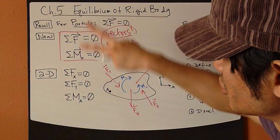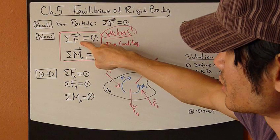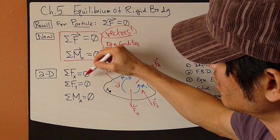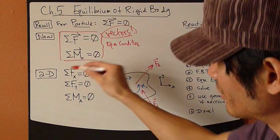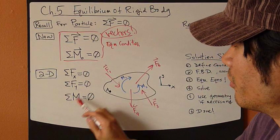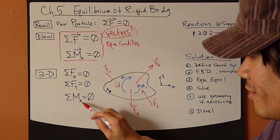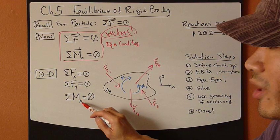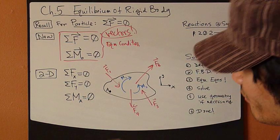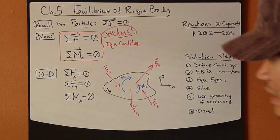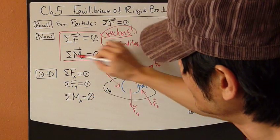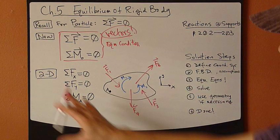The sum of forces equation will have X and Y components. Each equation is now a scalar equation, so you can plug in numbers. The sum of moment equation is also now a scalar — the sum of moments about any point A, where this point can be on the body or outside the body. So now you're dealing with scalar equations for 2D space.